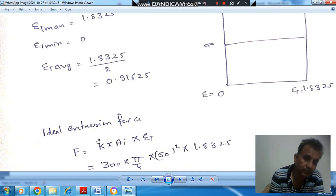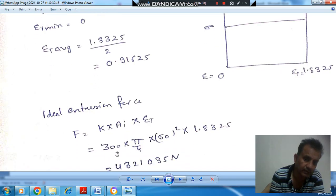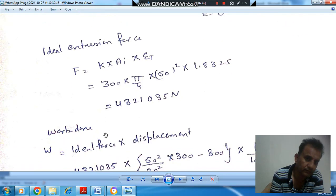And the ideal extrusion force is K, which means yield strength, into initial area into true strain. So K is 300 and initial area is π/4 × 50². And this is your true strain. So that is your ideal extrusion force.